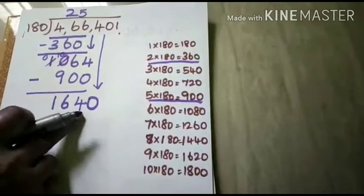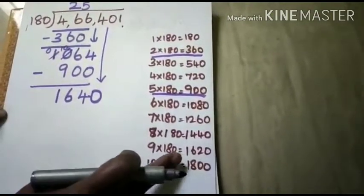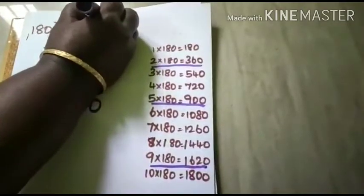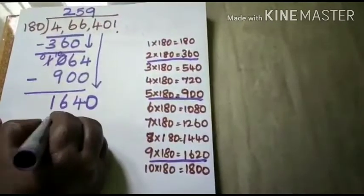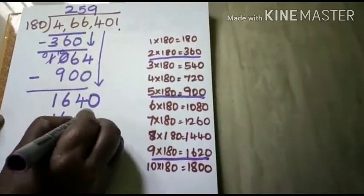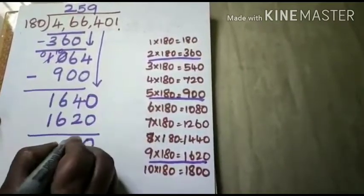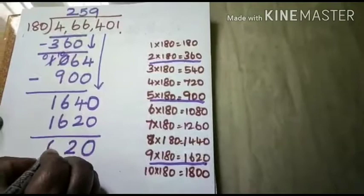Now 1640 comes before 1800. So you have to take this one 9 times. 9 into 180 is 1620. Subtract. Here it will be 0, 4 minus 2 is 2, and here it is 0.